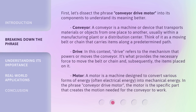First, let's dissect the phrase 'Conveyor Drive Motor' into its components to understand its meaning better. Conveyor: a conveyor is a machine or device that transports materials or objects from one place to another, usually within a manufacturing plant or a distribution center. Think of it as a moving belt or chain that carries items along a predetermined path.